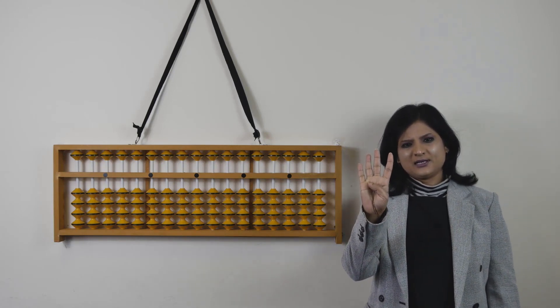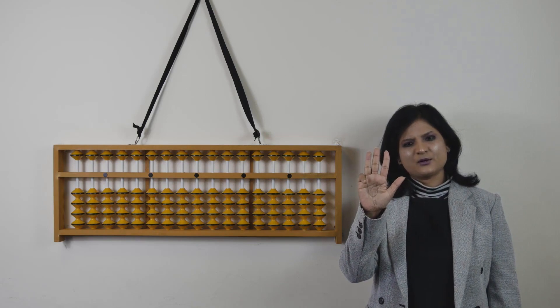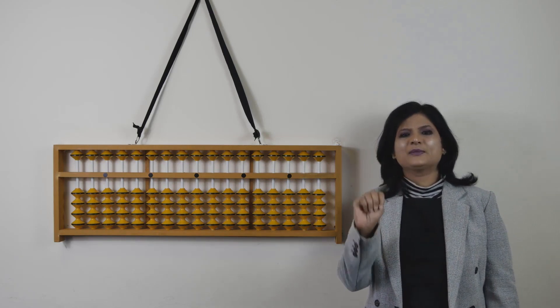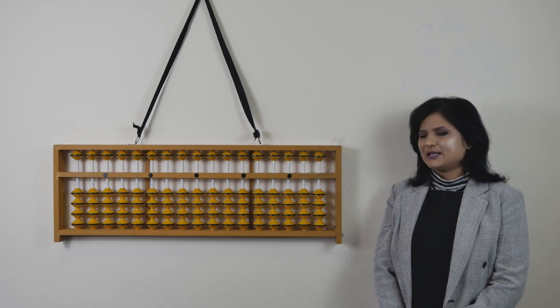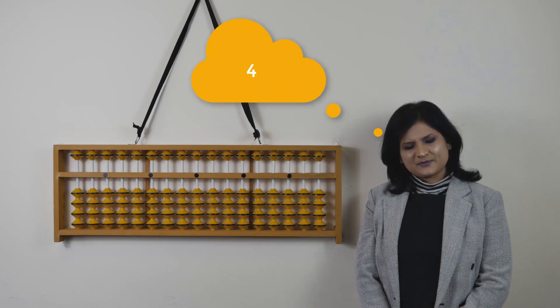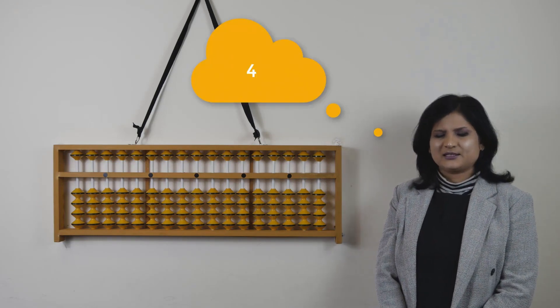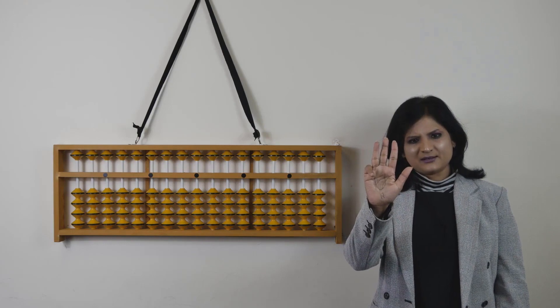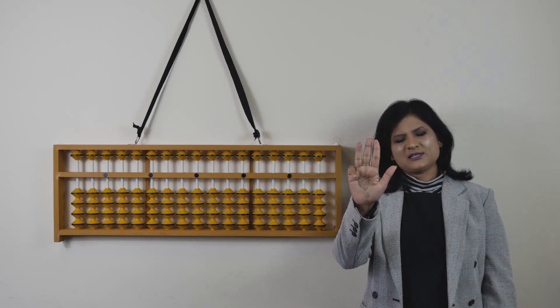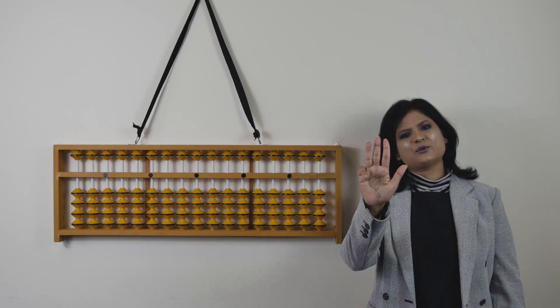Once again: I have 4 and I want to add another 4. Because I'm running out of fingers, I will use the add 5 take away 1 combination to add 4. In general, 5 minus 1 is 4 — that's right. So that is what I am doing in this combination. So 4 add 4 is: add 5, take away 1. That's what I'm doing to add 4.